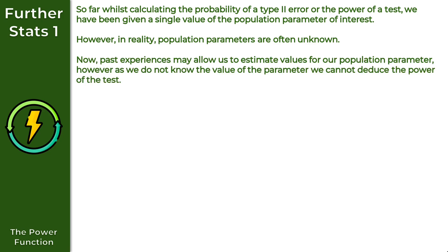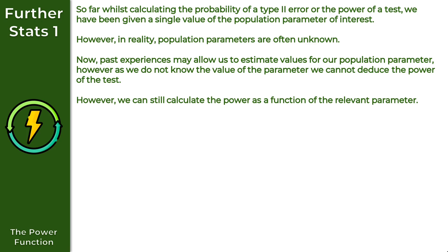Using past experiences, we may be able to estimate values for our population parameter. However, because we don't know the value of the parameter, we cannot deduce the power of the test. However, we can still calculate the power as a function of our relevant parameter, and this is what we call the power function.